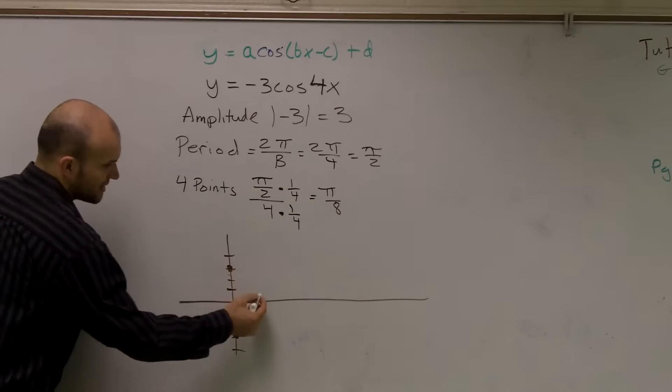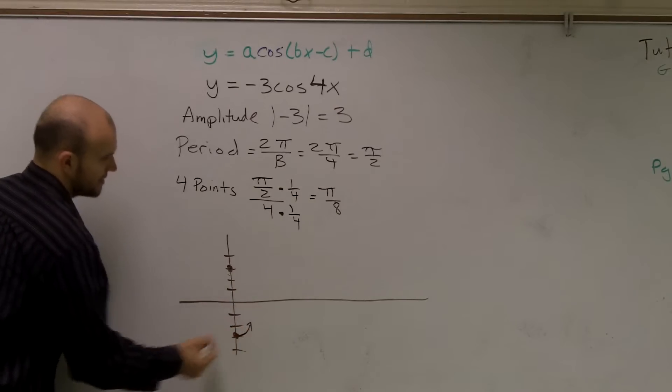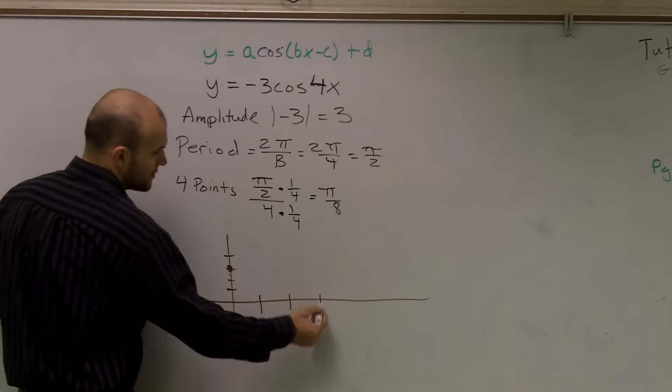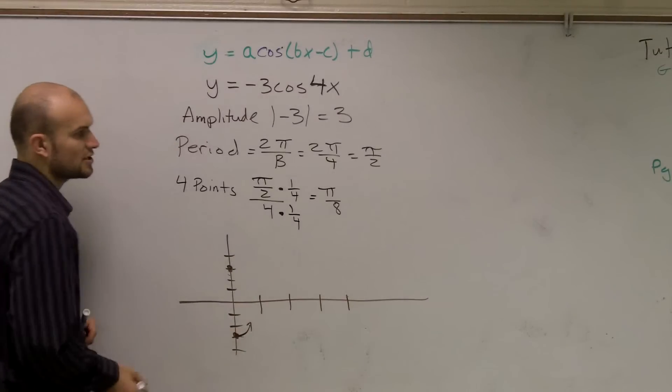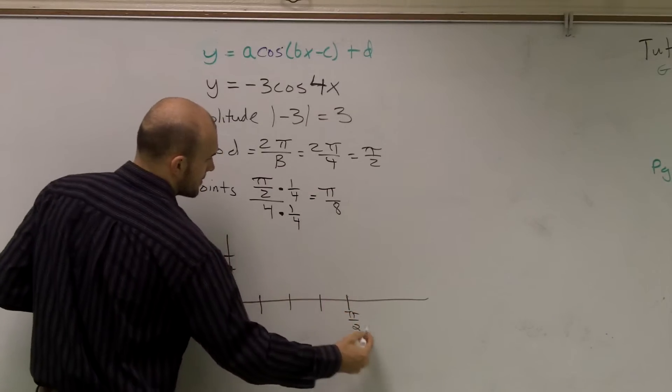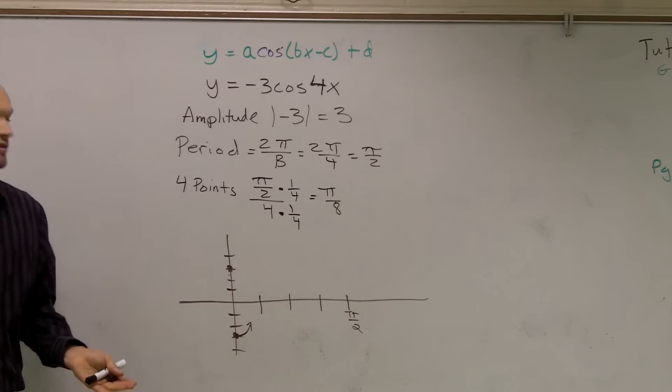And so instead of going like this, it's going to start going right there. Then I told you there's four important points. So we could say 1, 2, 3, 4. Where here is your end and your period, which was π over 2. So you might say, well, how do we figure out the rest of them?